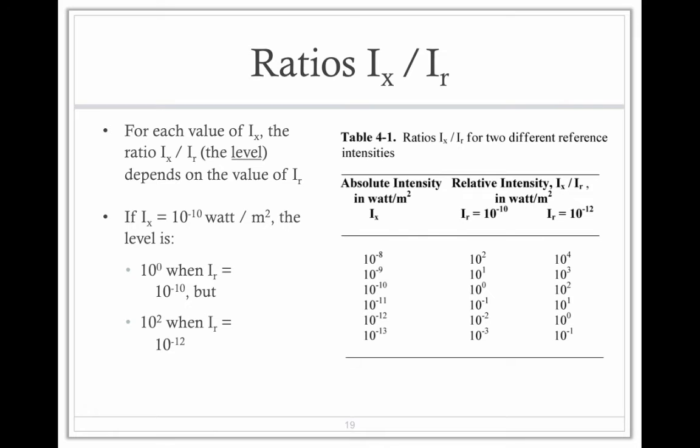The left column is absolute intensity. The middle and right columns have two references. You have I reference 10 to the negative 10, that would be your base reference, or a reference of 10 to the negative 12. If you were to use the first one, 10 to the negative 8, and compare it to 10 to the negative 10, your relative measure is 10 to the 2.